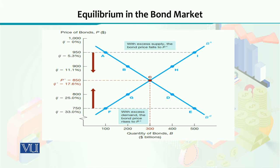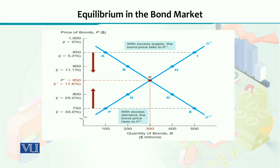It will continue to be like this until and unless there is an external shock which will change either the supply, the demand, or the interest rate. Whatever thing changes among these three, your whole setup of equilibrium will then reset, and eventually it will go to another level, or settle at a new equilibrium level.